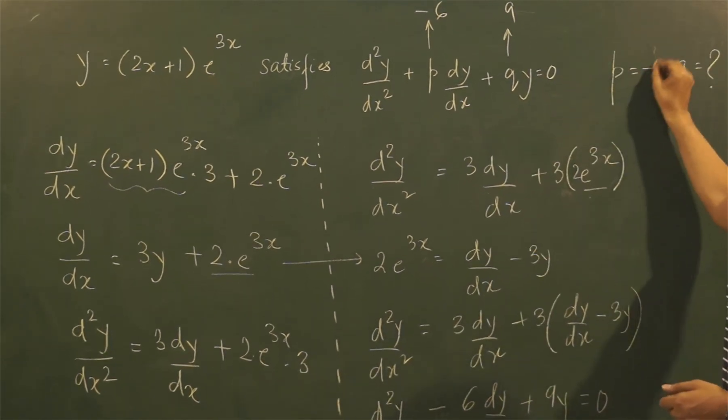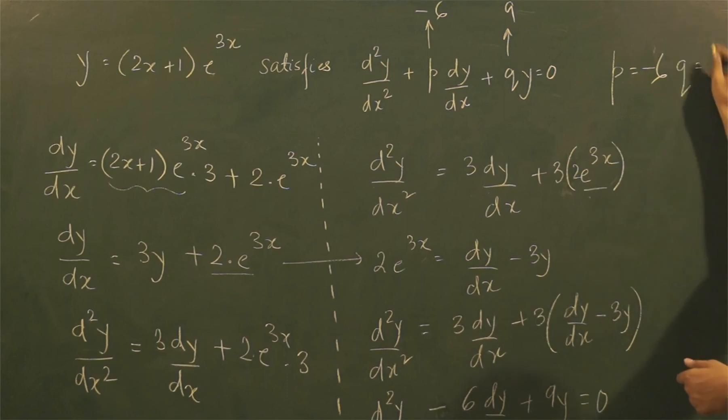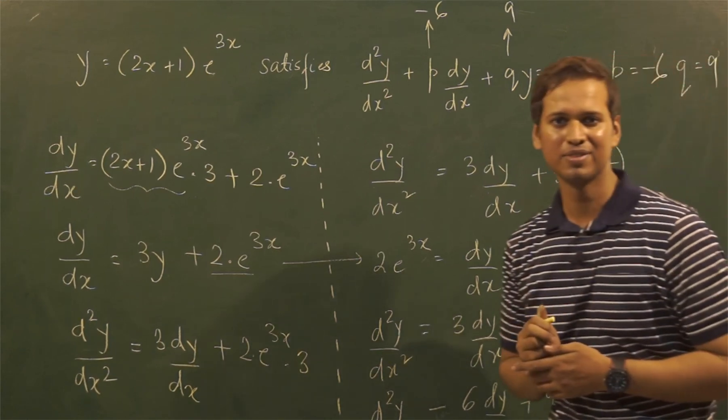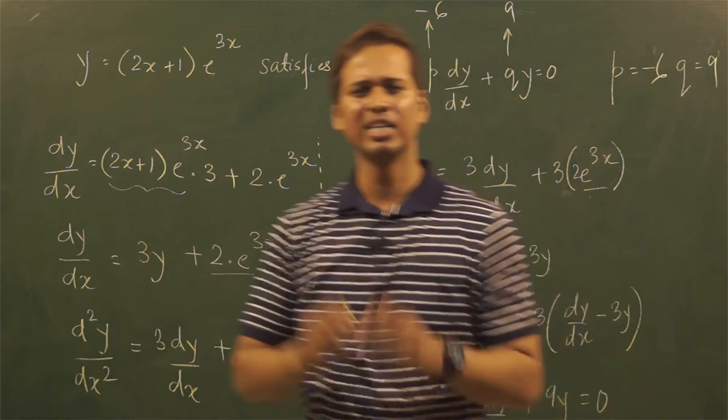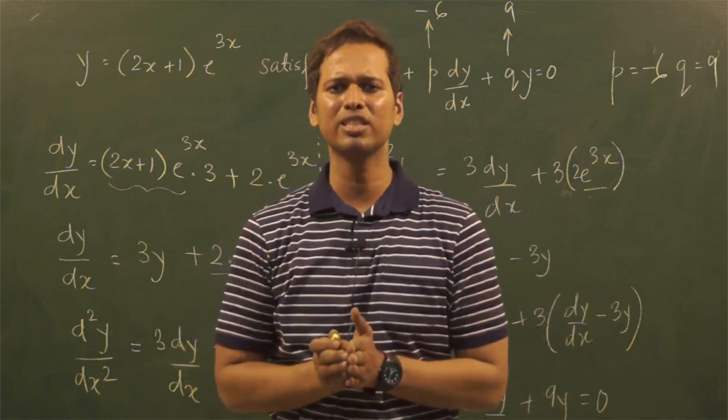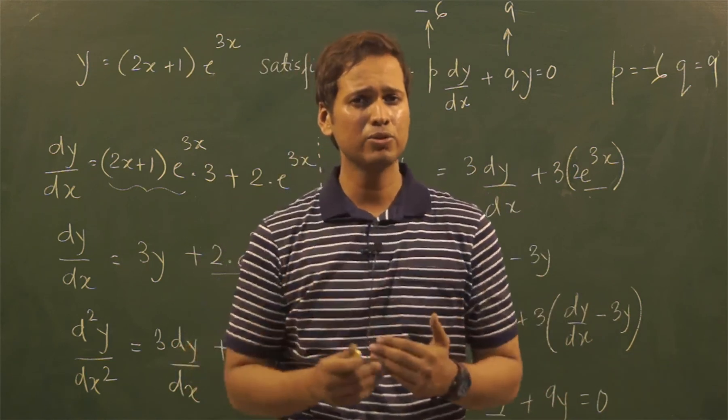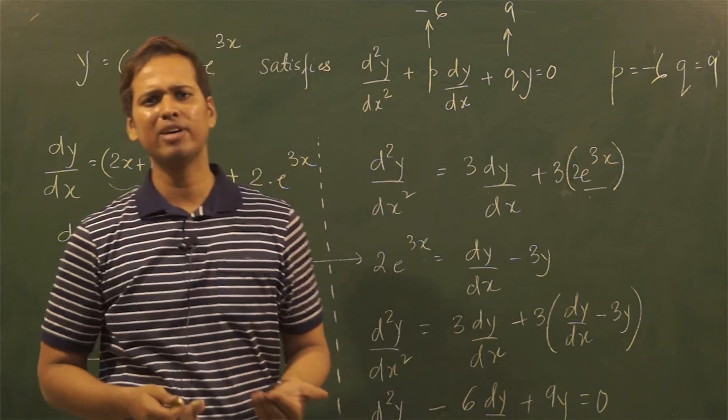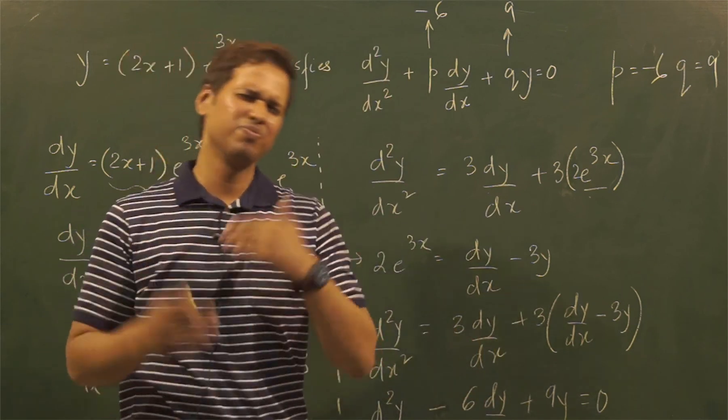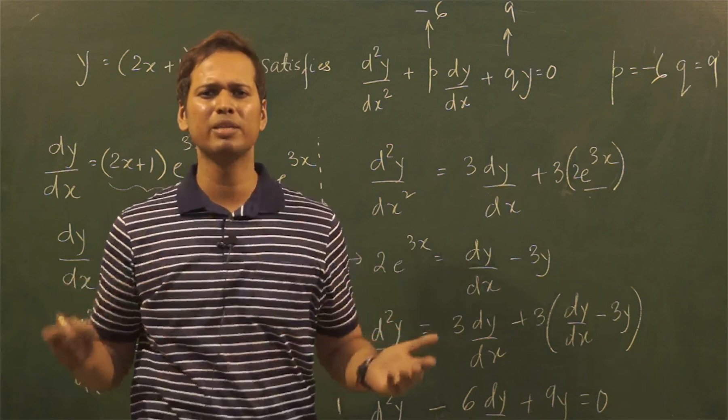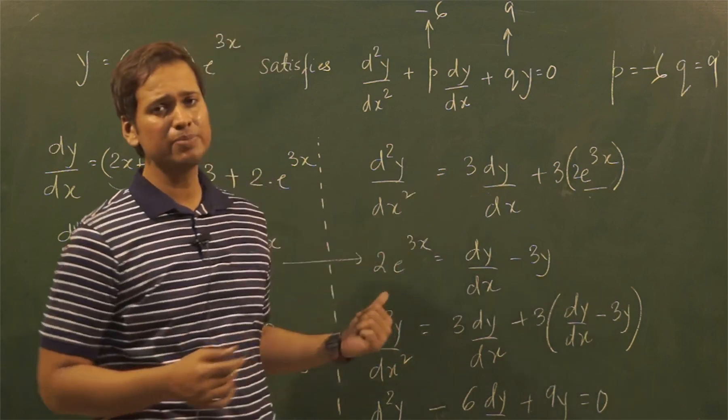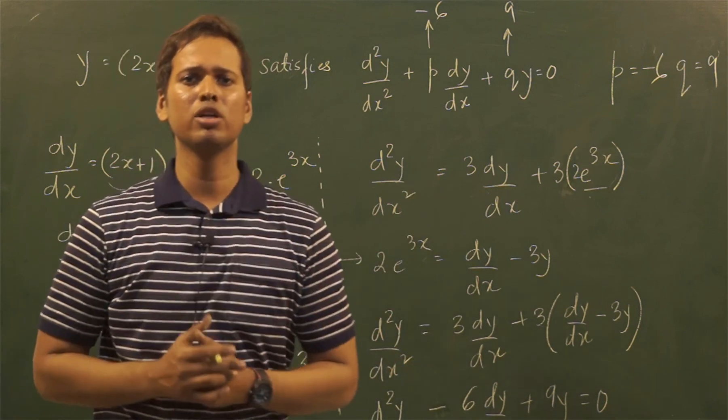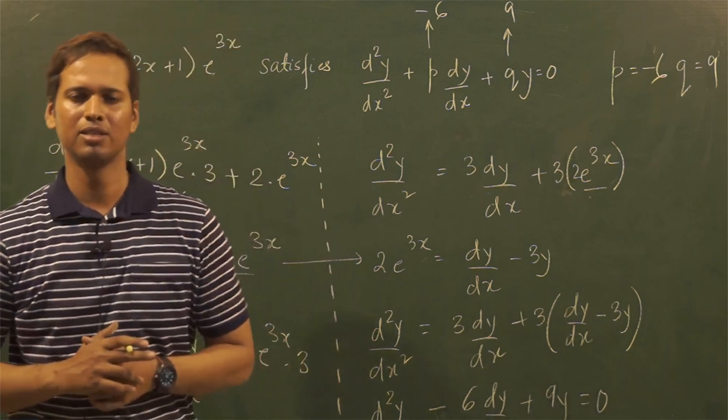So this brings you to the answer: p is minus 6 and q is 9. Hope this is very clear. This is a much faster way to solve such kind of a problem. Many of the students have tried substituting dy/dx and d²y/dx², which works in some scenarios but may not work in many. So you can use this method to simplify your process of solving this problem. Thank you so much.